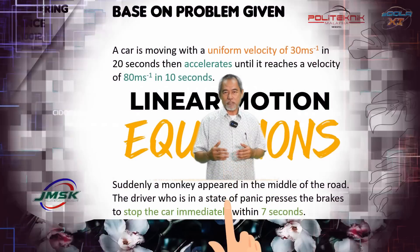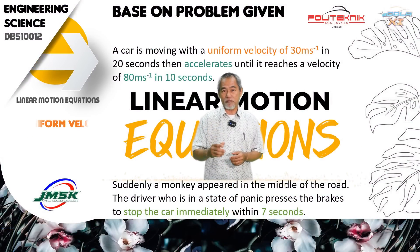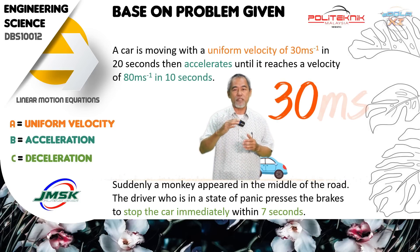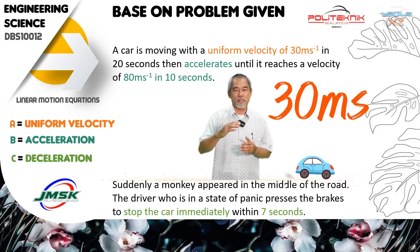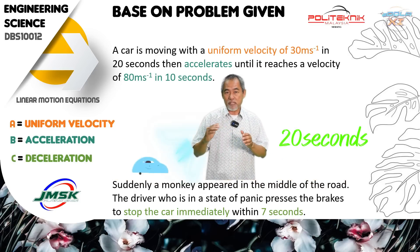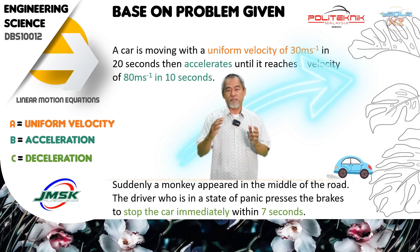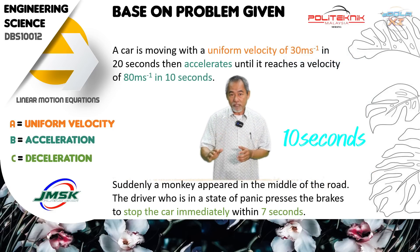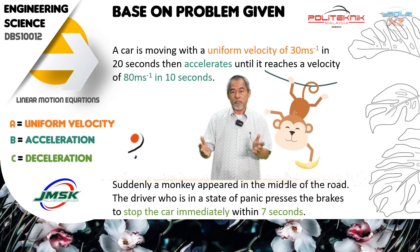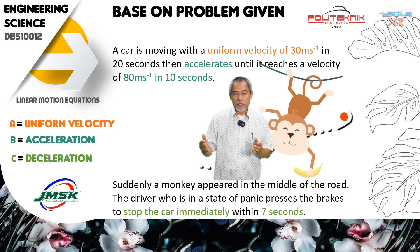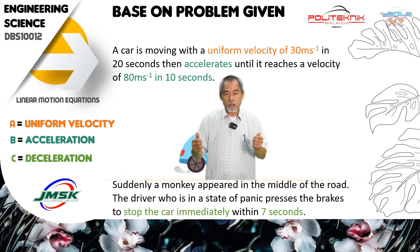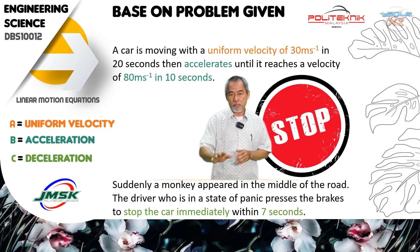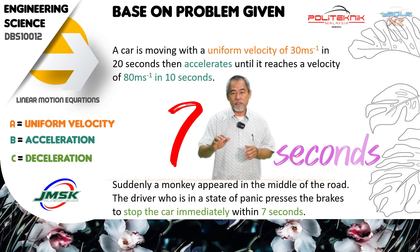Motion Equation. Based on the problem given, a car is moving with a uniform velocity of 30 meters per second for 20 seconds. Then it accelerates until it reaches a velocity of 80 meters per second in 10 seconds. Suddenly, a monkey appeared in the middle of the road, and the driver, in a state of panic, pressed the brake to stop the car immediately within 7 seconds.